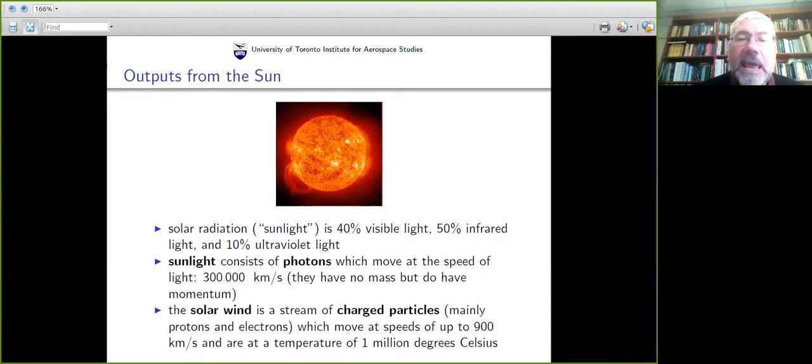In addition to sunlight, there are some things you can't see coming out of the sun called the solar wind. The solar wind is a stream of charged particles, mainly protons and electrons. The sun is constantly sending these out at a speed of about 900 kilometers per second - still very fast, but some 300 times slower than sunlight. These charged particles are extremely hot, basically a million degrees Celsius. We call this type of soup made up of charged particles a plasma.